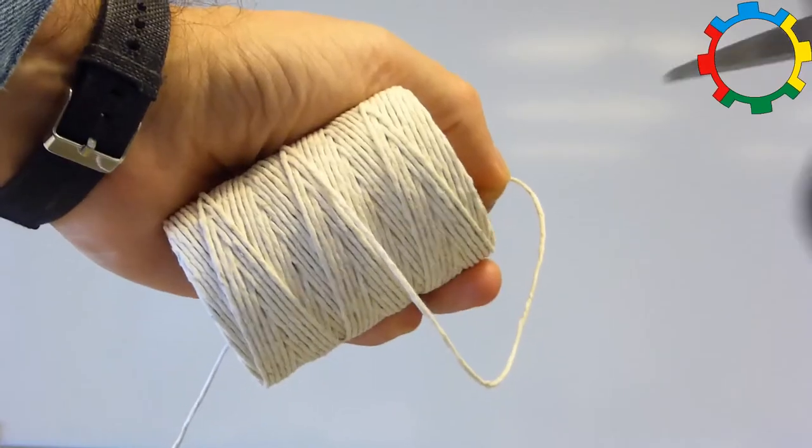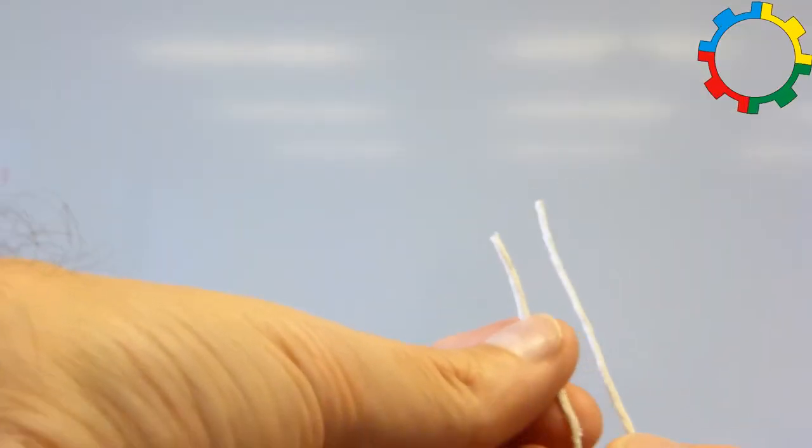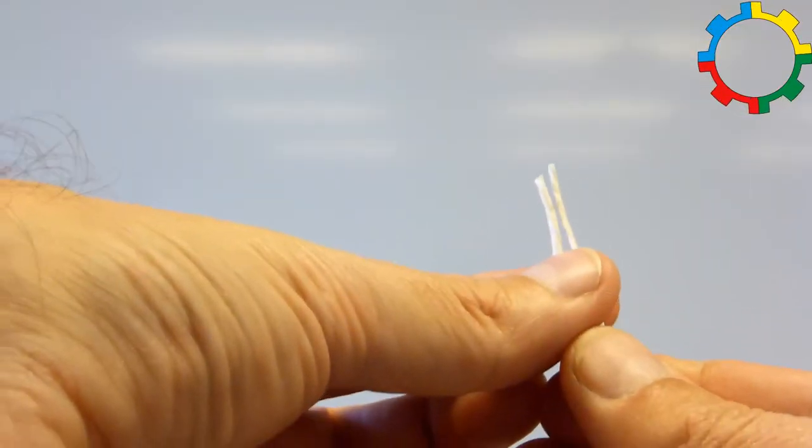Measure a piece of the string that is one arm span long, and cut it off. Cut the piece into halves.